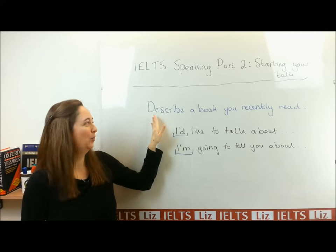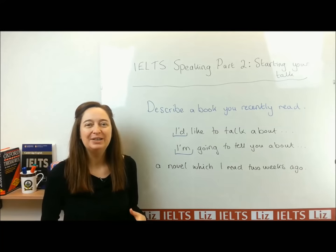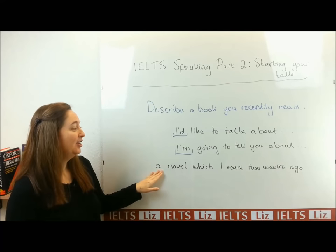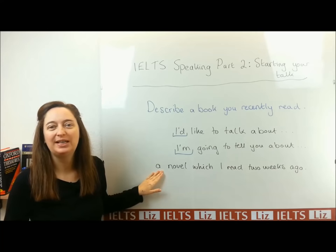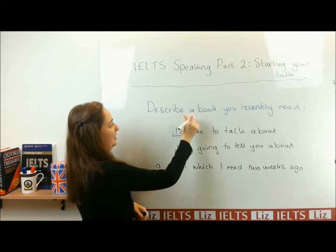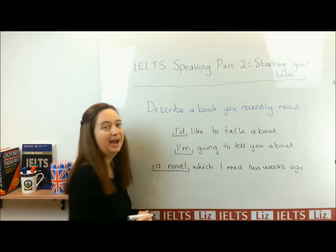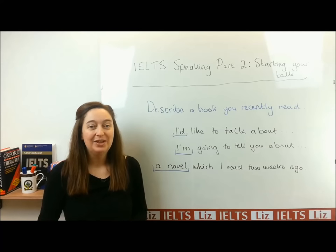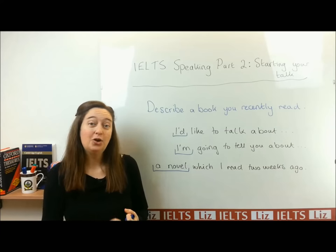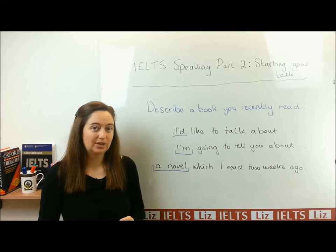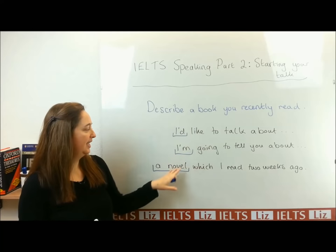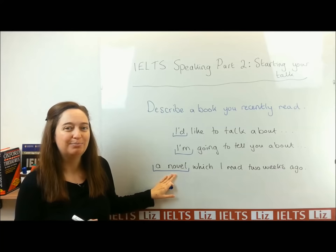So now let's look at how we could paraphrase that. Here's one way to paraphrase the information on the card: 'I'd like to talk about a novel which I read two weeks ago.' You can see that the word 'book' is paraphrased as 'novel.' You need to learn all the different types of books — was it a novel, fiction, non-fiction, a guidebook, a self-help book? That's one way to paraphrase: take the word and be more accurate about what kind of book it was.